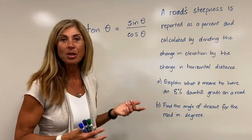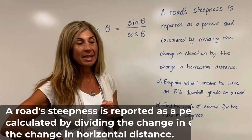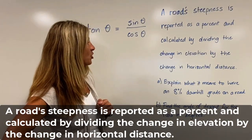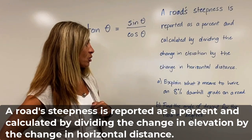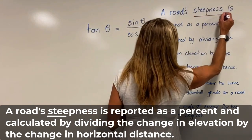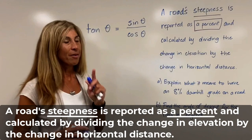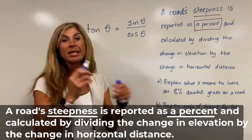So here's a typical problem that you can expect to see. A road steepness is reported as a percent and calculated by dividing the change in elevation by the change in horizontal distance. Now I want you to take note that the steepness is given as a percent. However, we need to identify what this means.